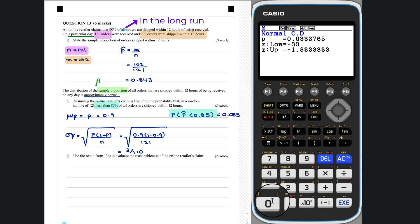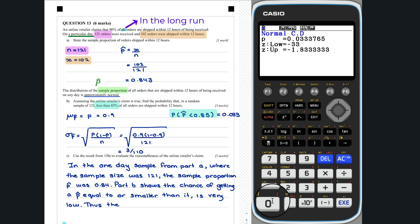Question 13c. In the one-day sample from part a, where the sample size was 121, the sample proportion was p hat equal to 0.84. Part b shows the chance of getting a p hat equal to, or smaller than it, is very low. Thus, the truth of the claim is worth questioning.